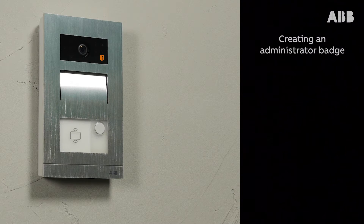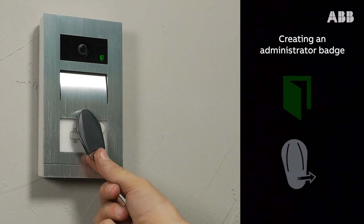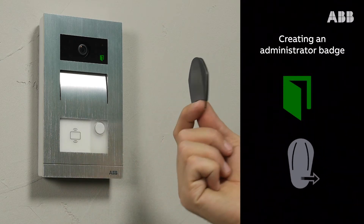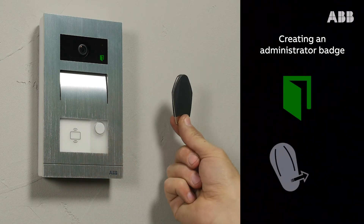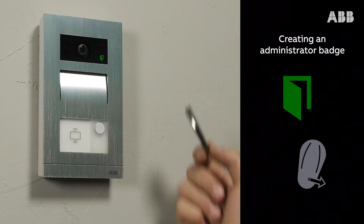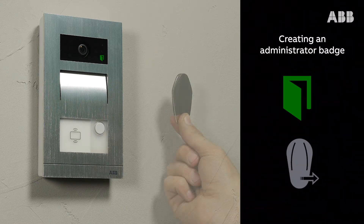Start by creating an administrator badge. Within 60 seconds of powering up the outdoor station, pass a first badge in front of the badge reader. The LED turns green — your badge has been validated as an administrator badge.